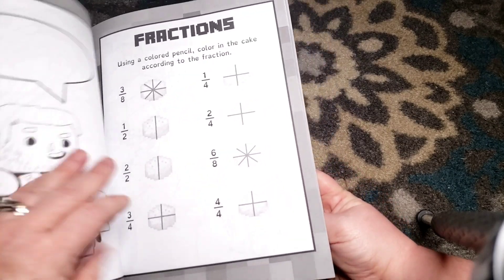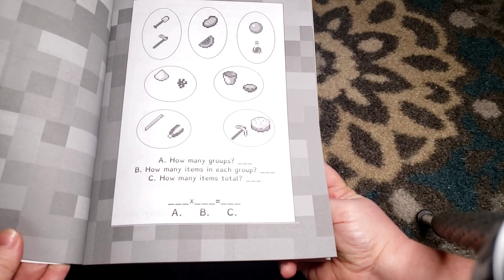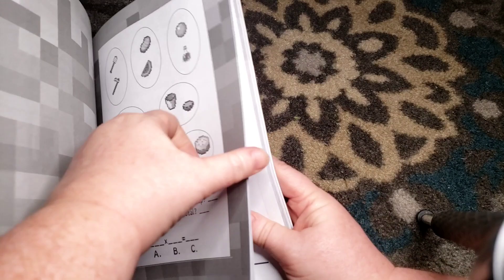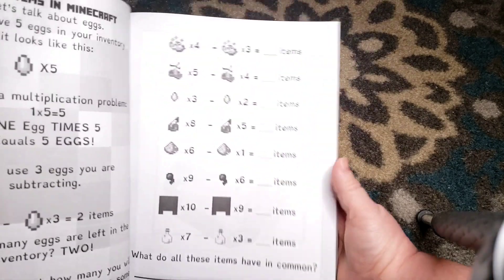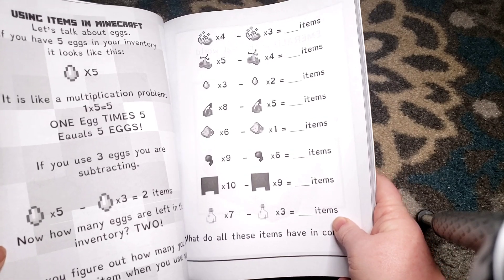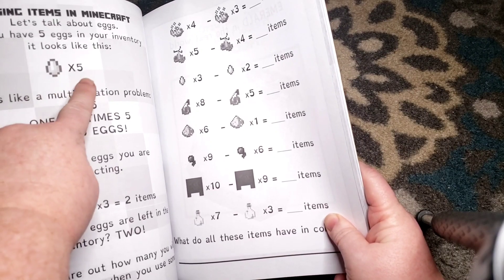Here's fractions and a little guy with a speech bubble. Here we have how many groups, how many items in each group, how many items total - so that's some multiplication practice right there. Over here we have using items in Minecraft. Let's talk about eggs.